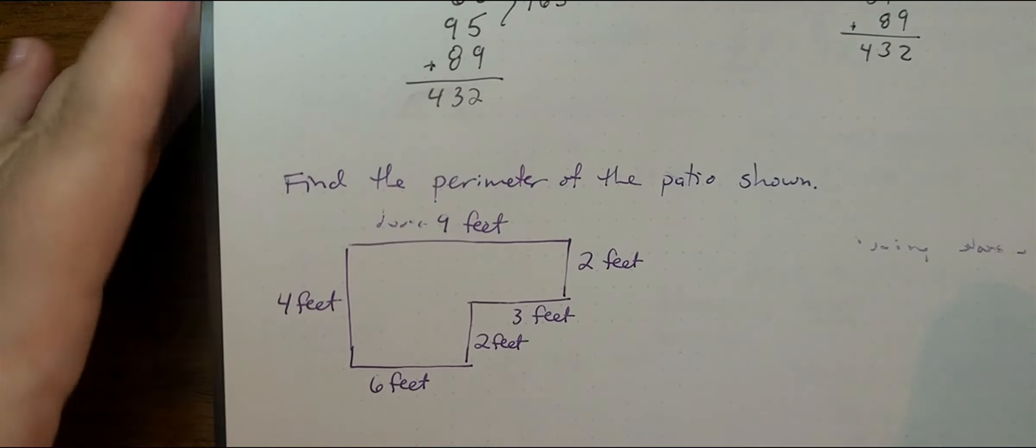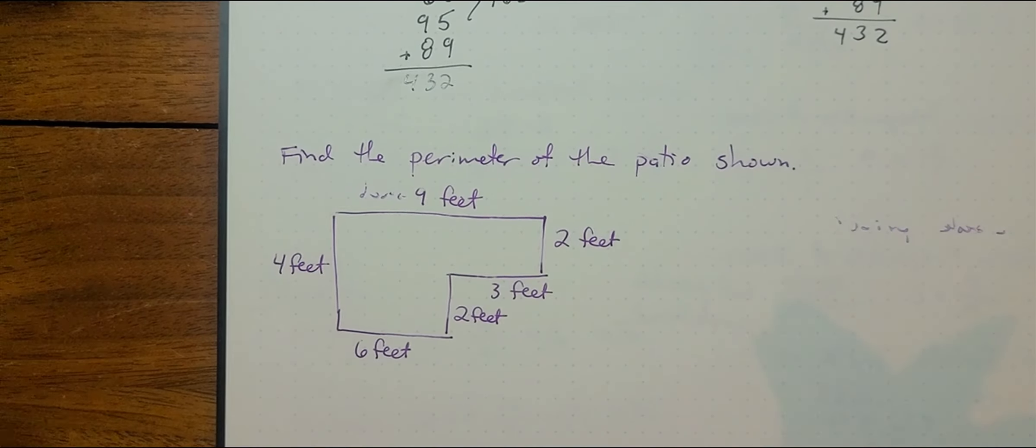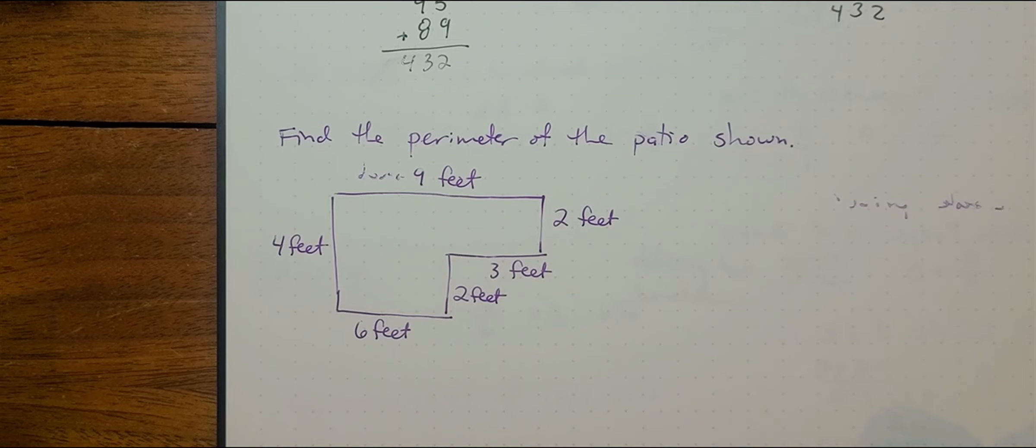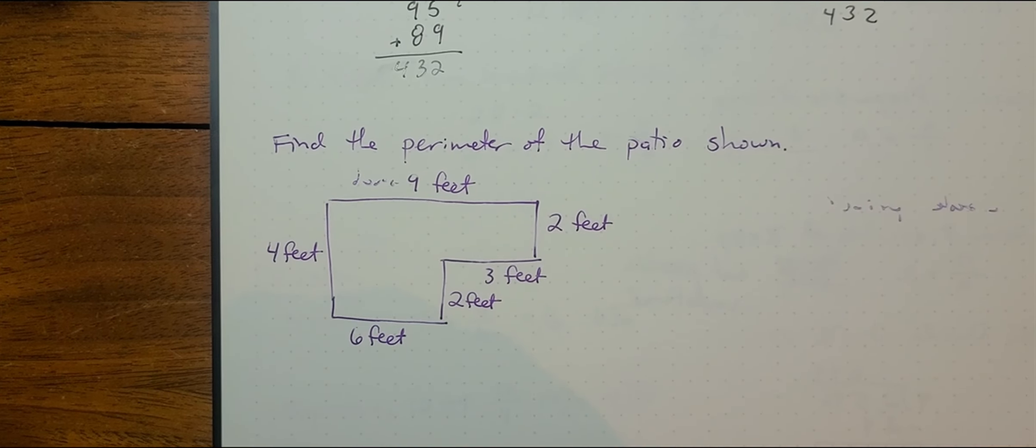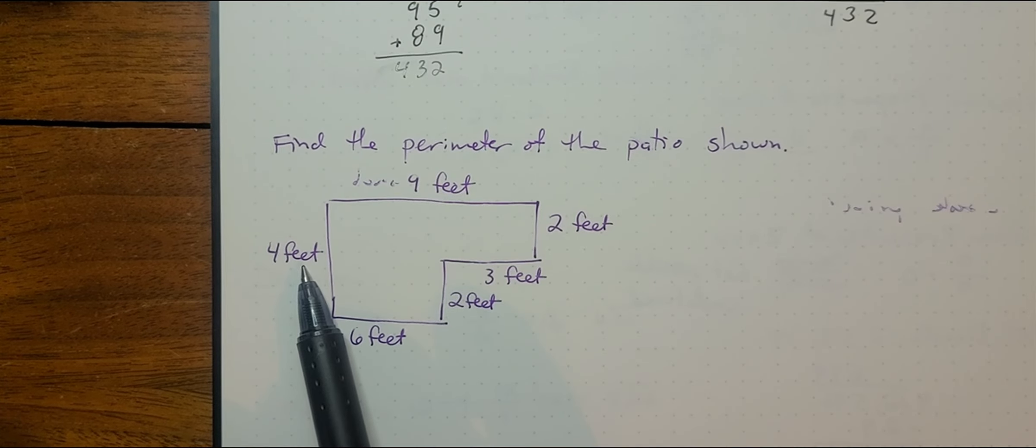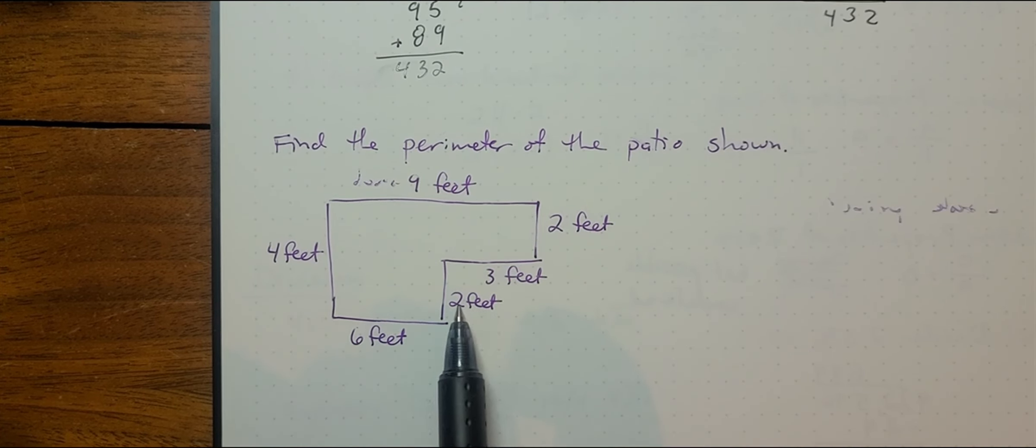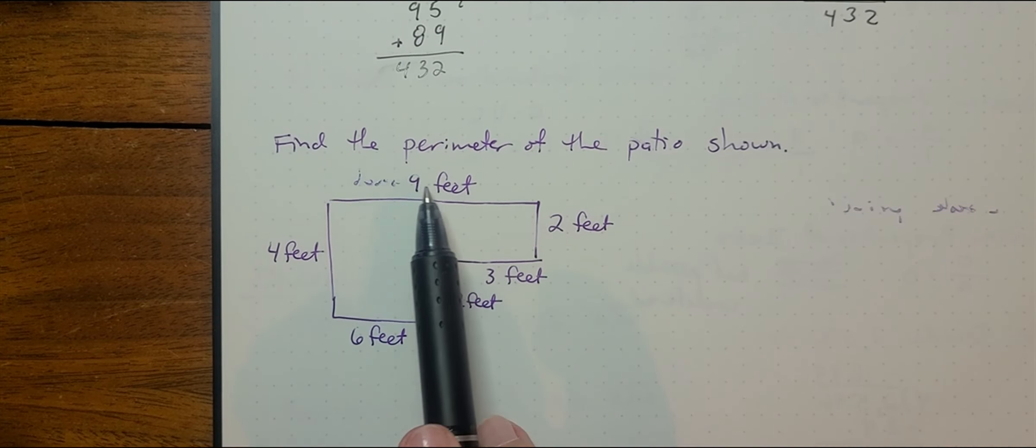Another problem that you might encounter: find the perimeter of the patio shown. The perimeter is just the distance around something. So if this is a patio, we've got four feet, nine feet, two feet, three feet, two feet, six feet. So we're just going to add that up.